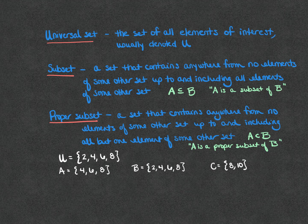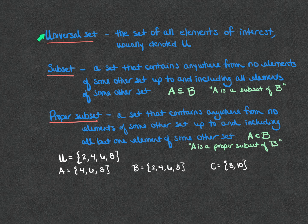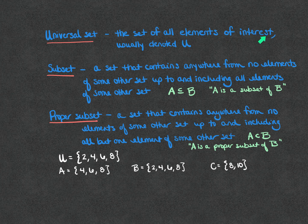First we're going to define a universal set. The universal set is the set of all elements of interest, typically denoted with the capital letter U. The universal set is not the set of all things in the whole universe. We could define the universal set as the set of digits 0 through 9, the set of all vowels in the alphabet, or the set of all students in a particular class. It's the elements of interest — what are we interested in.